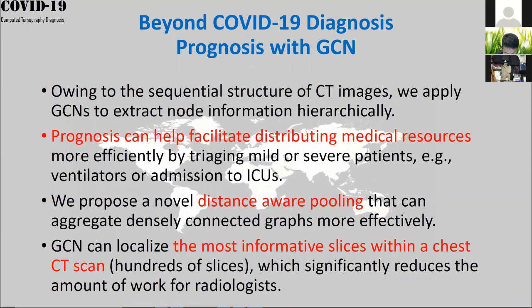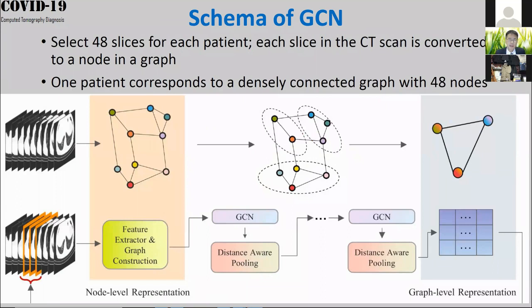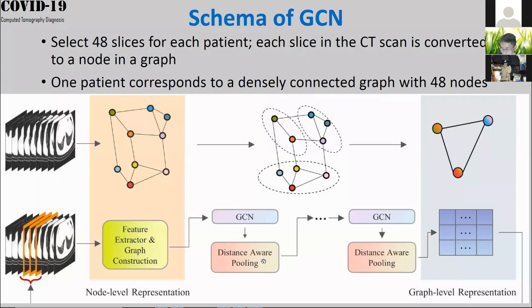Radiologists can focus on the recommended slices for better diagnosis instead of reading hundreds of slices one by one. In the GCN schema, we select 48 slices per patient. Each slice is converted to a node in a graph, so one patient corresponds to a densely connected graph with 48 nodes. We then perform node reduction using distance-aware pooling to aggregate features and reduce dimensionality.